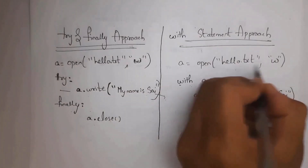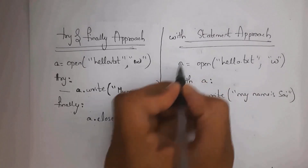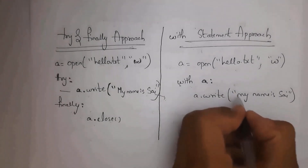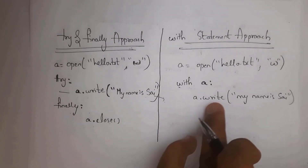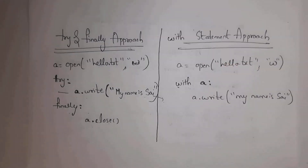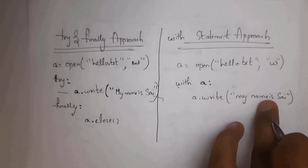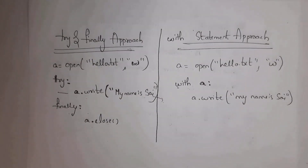Next is the with statement approach. I write: a = open('hello.txt', 'w'), then: with a: a.write('my name is sai'). The with statement will automatically close the file — there is no need to write a.close(). If there is no exception it adds the text and closes the file automatically. Even if an exception occurs, it will still close the file automatically. This is the with statement approach.